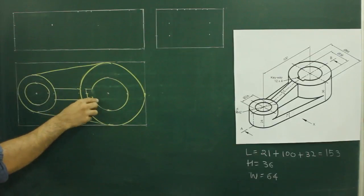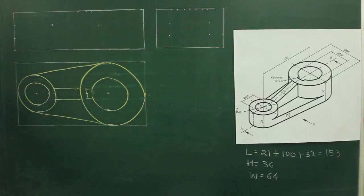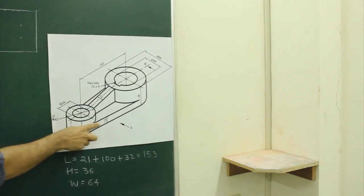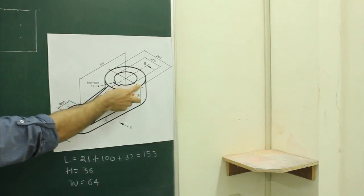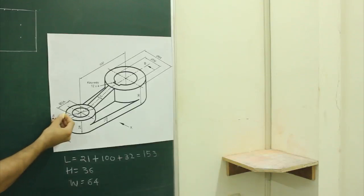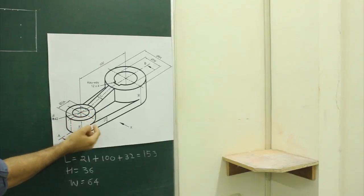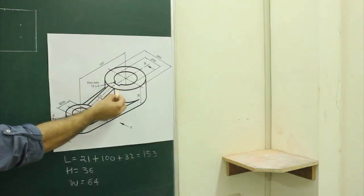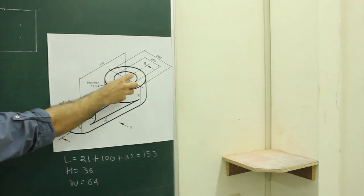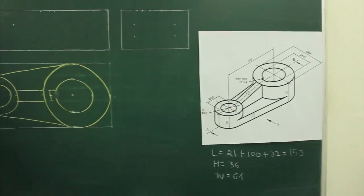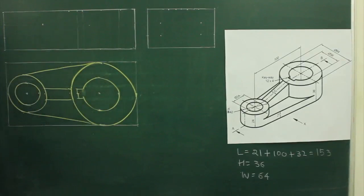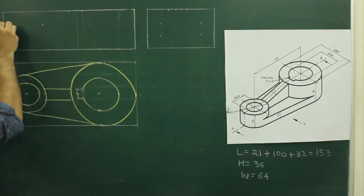We are done with the top view. Now we will draw the front view. In the main diagram, in the front view, you can see this part is a rectangle, this is a rectangle, this is a slope, and this is another rectangle. In this front view, how many dotted lines would there be? Five — one for this, one for this, one for this going through and through, one for the key slot going through and through, and one for this part.